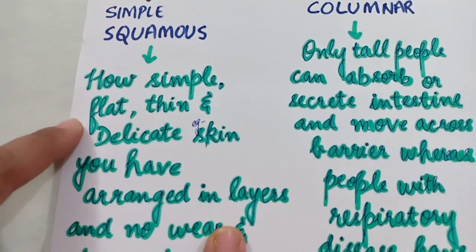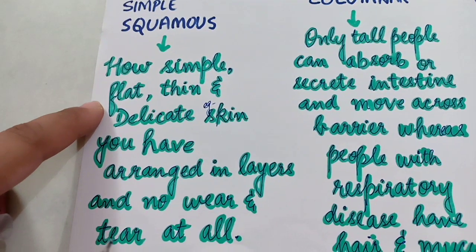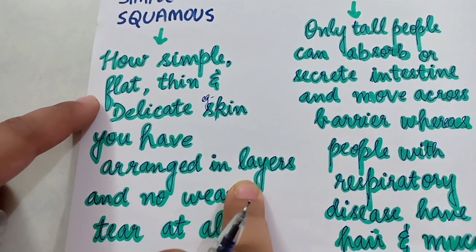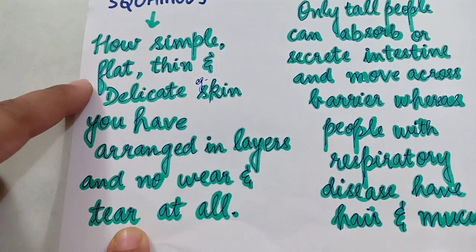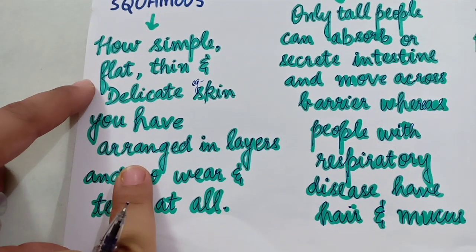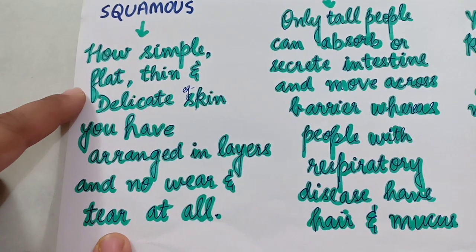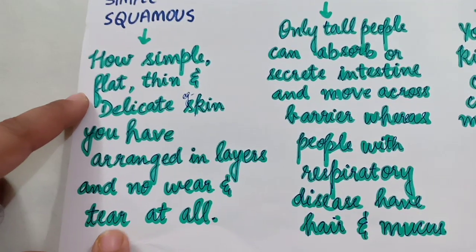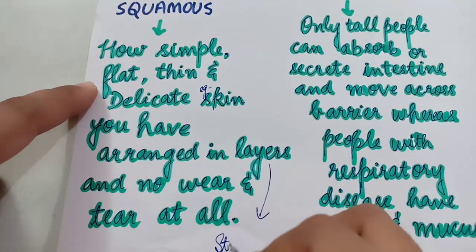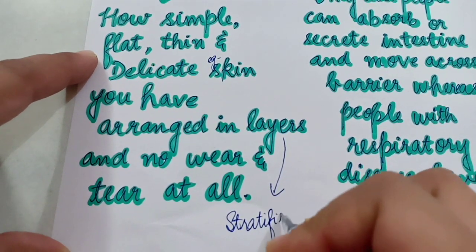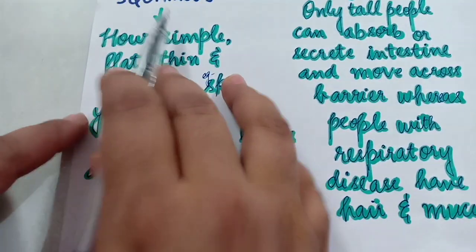'Arranged in layers' means these simple squamous epithelial tissues are arranged in many layers in order to prevent wear and tear of the tissues. They are arranged in a pattern of layers, and that is why they are also called stratified — the word 'strata' means layers — stratified squamous epithelial.